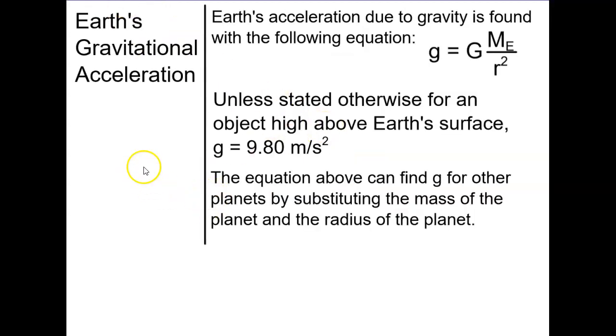So Earth's gravitational acceleration, the way we actually found little g is actually by taking big G times the mass of the Earth divided by the radius of the Earth squared. So really, that little g is 9.8 meters per second squared. We round that up to 10 in this particular class, just for ease of use. It just makes your calculations a little easier.